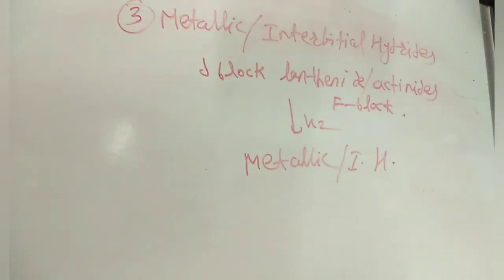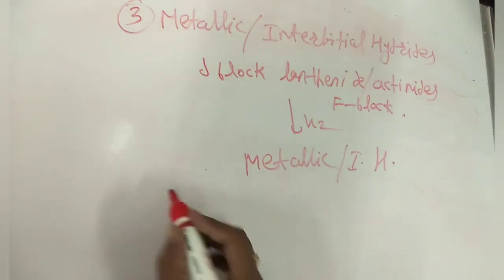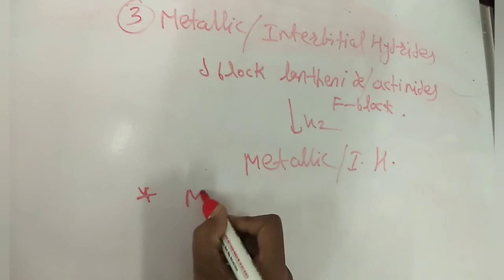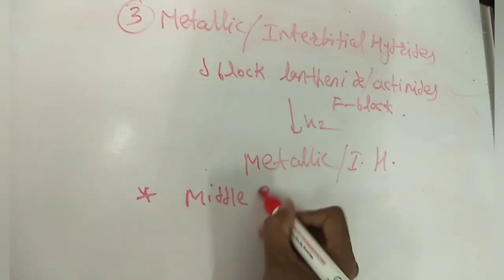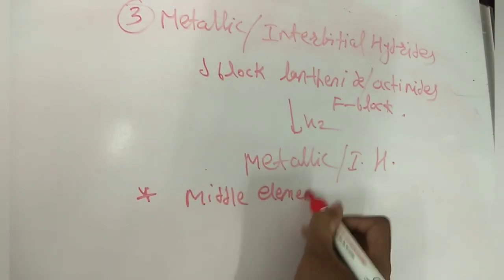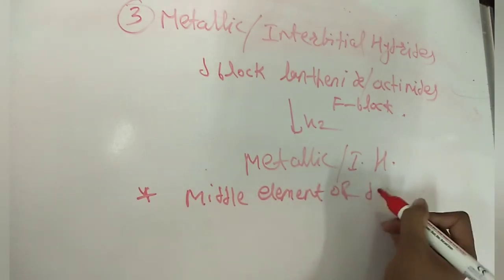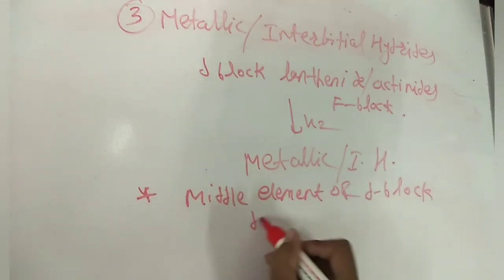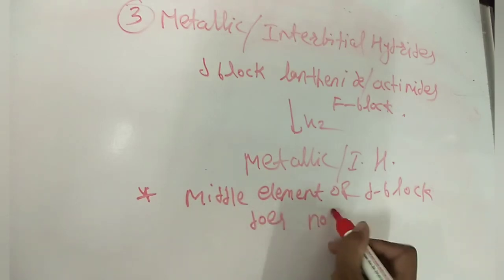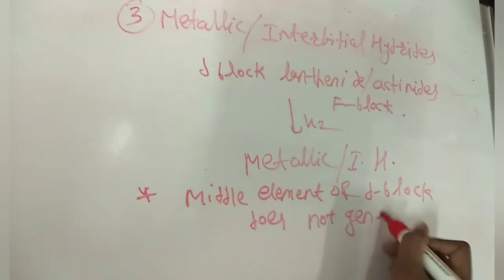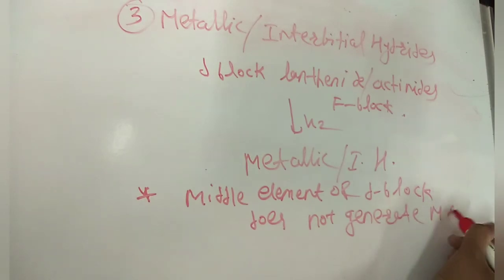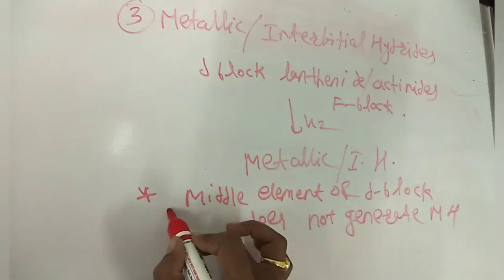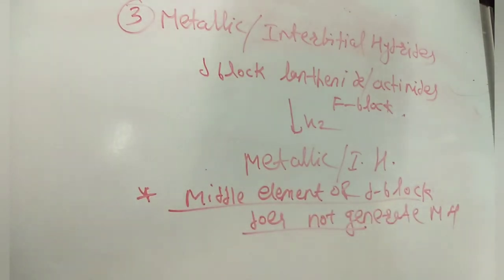An important point: the elements present in the middle of the D-block do not form metallic hydrides. The absence of hydrides in a part of the periodic table is called the hydrogen gap.